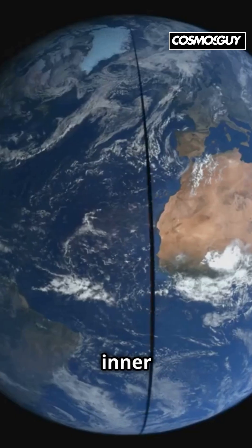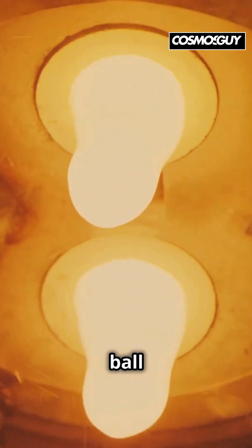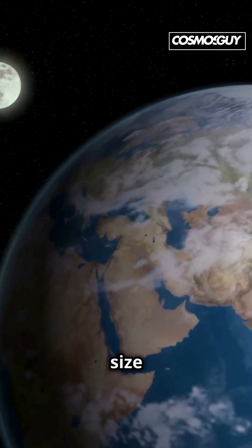Scientists have discovered that Earth's inner core is changing shape. Imagine a massive solid ball of iron and nickel, about the size of the moon, slowly deforming over just two decades.